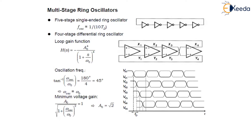Next we have the multi-stage ring oscillator — a five stage single-ended ring oscillator, as shown in the figure. The frequency of oscillation in this five stage single-ended ring oscillator using CMOS inverter is given as 1 upon 10·Td. In the earlier slide for the three stage we had 1 upon 6·Td, and in this case we have 1 upon 10·Td for the five stage single-ended ring oscillator.